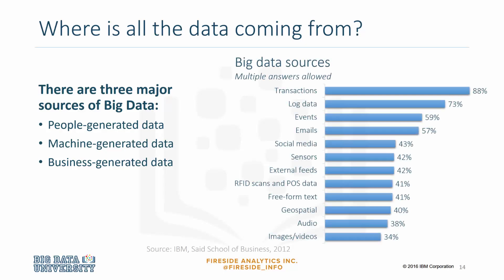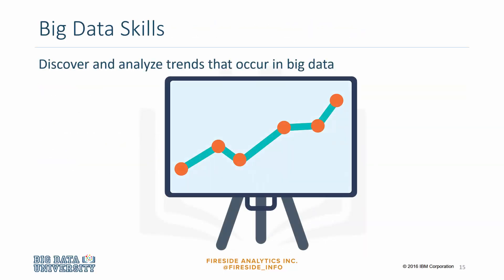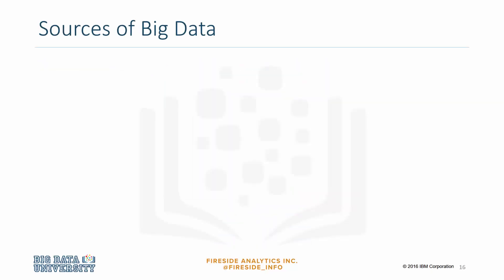The chart on the right shows different responses where responders were allowed to select multiple answers. Big data will require analysts to have big data skills, including discovering and analyzing trends that occur in big data. Big data comes in three forms: structured, unstructured, and semi-structured.